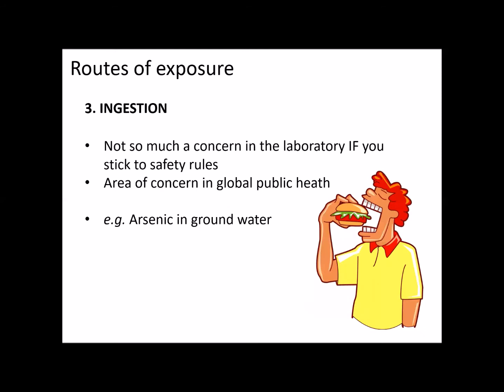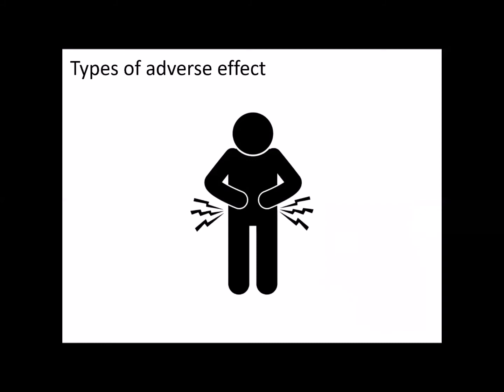Our third route of exposure is ingestion. This isn't so much a concern in the laboratory — this is why we have strict safety rules about not eating or chewing gum in a chemical laboratory. Ingestion and toxicology is more of a concern in global public health. For example, there are many countries where there are high levels of arsenic naturally occurring in groundwater and surface water. People sourcing drinking water or growing rice in paddy fields where water is contaminated with arsenic might take a lot of arsenic into their bodies, causing really severe acute and chronic health effects.